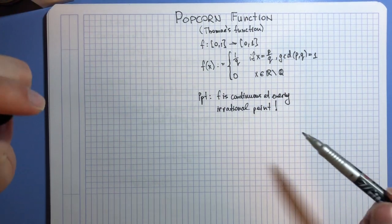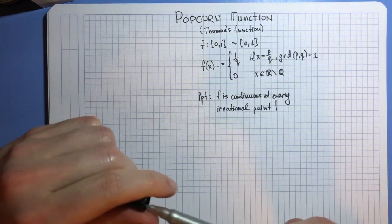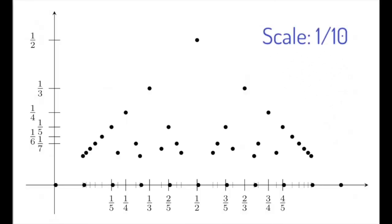But before we make any judgments, let us appreciate the graph of this function. Here's the plot of our function at scale one-fifth, meaning that the smallest fraction that I evaluate the function at is one-fifth. This is what happens at scale one-tenth. We have more points.